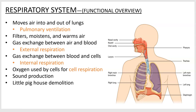When the oxygen is used by your cells, that's called cell respiration — that's the process where you do glycolysis, the Krebs cycle, and the electron transport chain to get ATP. You also use your respiratory system for sound production, which is a really important function. Humans have become as powerful as they are partly because they are able to communicate with each other so well.